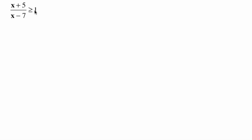We actually want a 0 here because it makes everything so much easier. If you're looking at when your rational expression is greater than or equal to 0, then you're just looking at when is it positive — when is the rational expression positive? Which we can break down to: when is the numerator positive, when is the denominator positive, when is it 0, when is it negative?